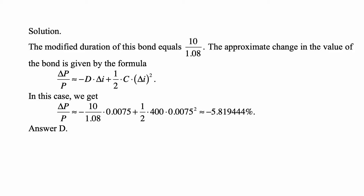The modified duration of this bond equals 10 — the Macaulay duration — divided by 1 plus the interest rate, so 1.08. The approximate change in the value of the bond is given by the formula: the change in price divided by the price is approximately equal to minus the duration times the change in interest rate, plus one half times convexity times the square of the change in interest rate. The change in interest rate is 75 basis points, or 0.75%, with a numerical value of 0.0075.